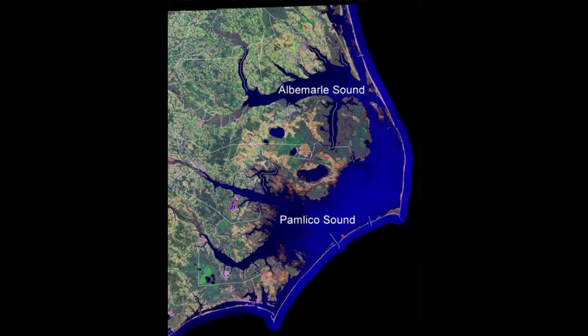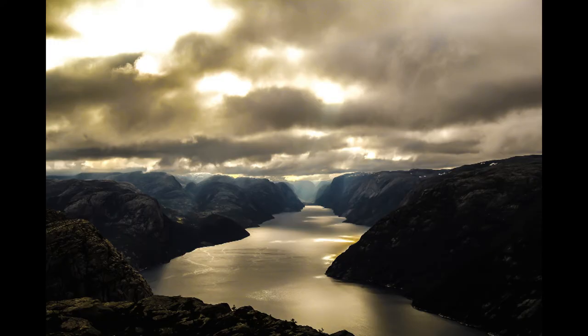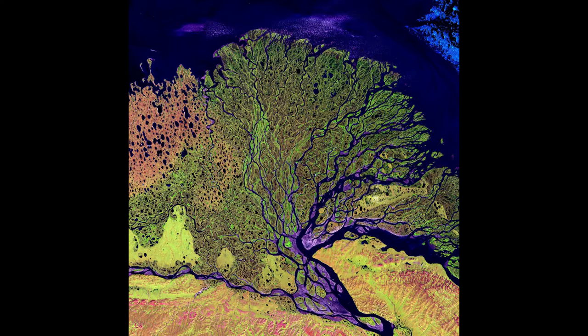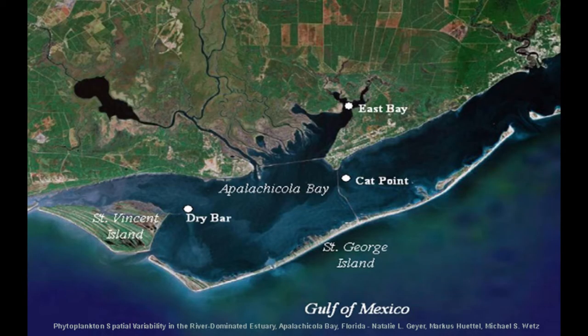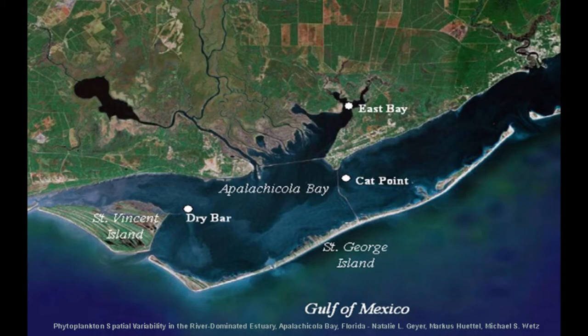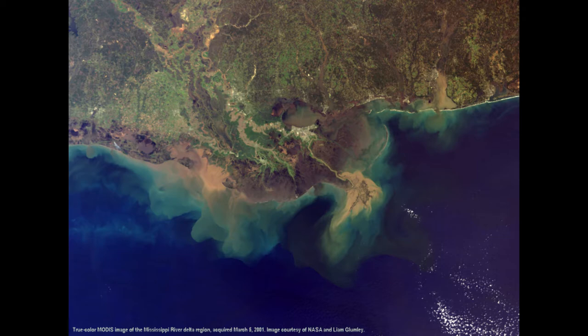The way a river flows out into the ocean is never the same. Currents, sediments, and humans often influence the river in its path to the ocean. Sediments can create huge deltas, whereas currents can push back the river significantly into the hinterland. This creates a huge diversity of estuaries or deltas.